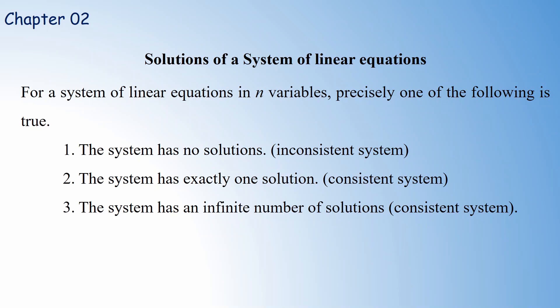For any system of linear equations in n variables, there are precisely three possibilities. The first is the system has no solution — we call it an inconsistent system. The second is the system has exactly one solution, and the third is the system has an infinite number of solutions. In the second and third cases, where a solution exists whether unique or infinitely many, we call it a consistent system.